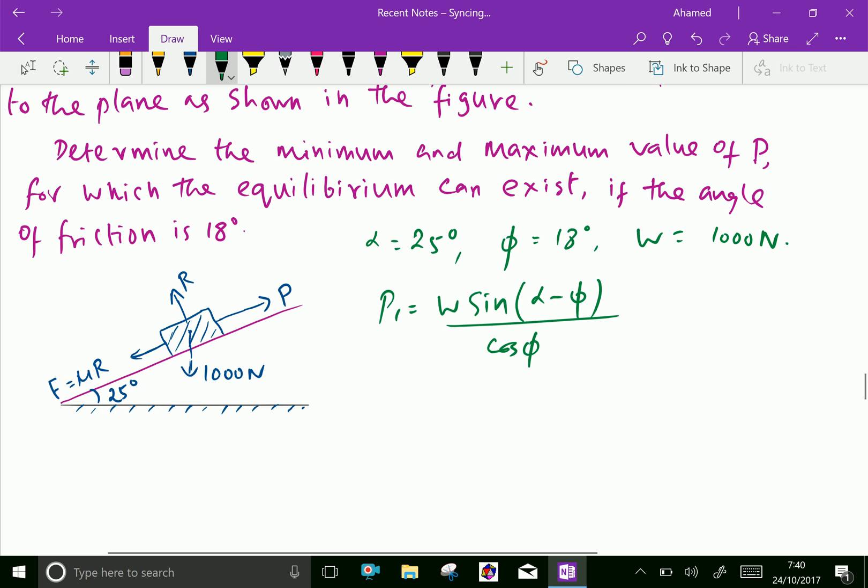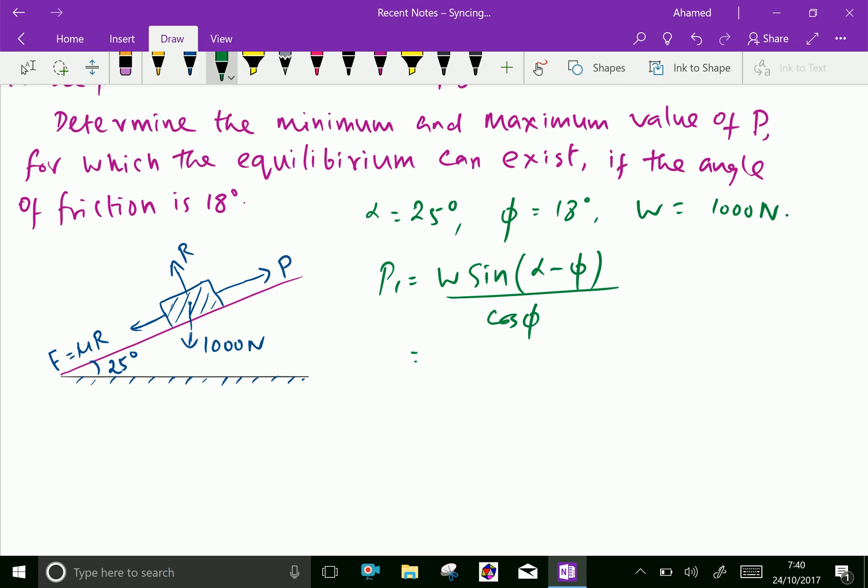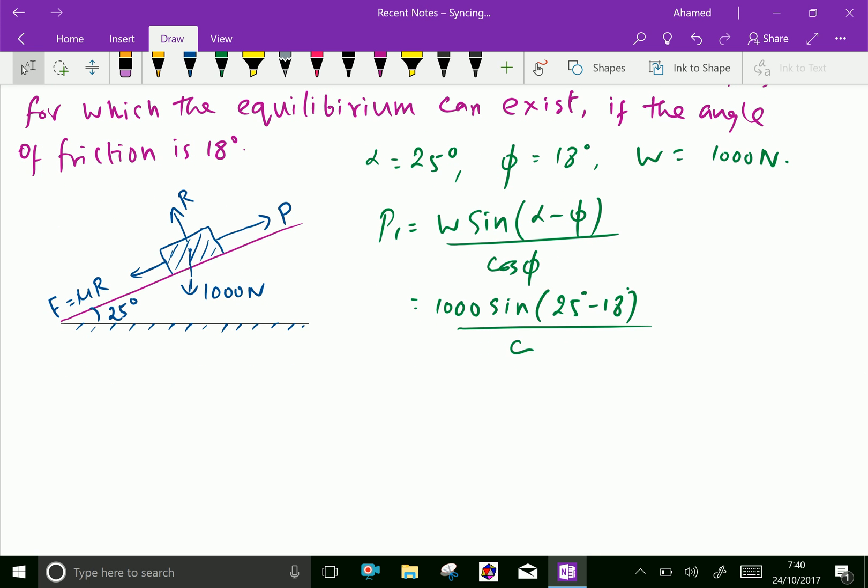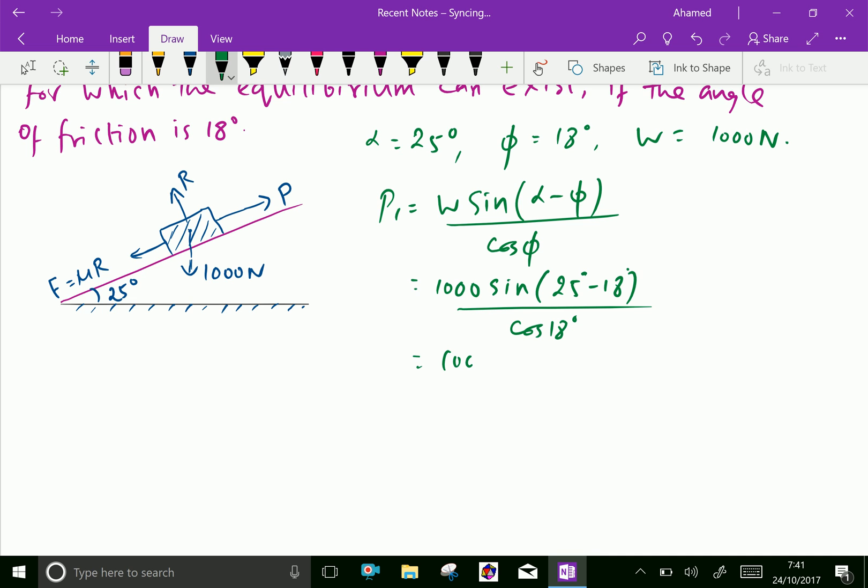We can put the values: W is 1000 Newton, sine (25 minus 18 degrees) over cos 18 degrees, which equals 1000 sine 7 degrees over cos 18 degrees.